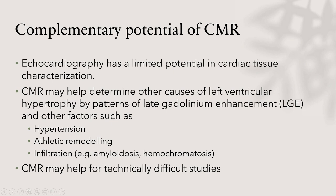Cardiac MRI can be used when wall thickness assessment is difficult, as it can measure on different planes and is complementary. There is also a place in the most recent ASE guidelines for 3D echocardiographic measurement, as 3D evaluation yields a ventricular mass more closely related to CMR than 2D evaluation alone, though this indication is relatively rare in clinical practice.